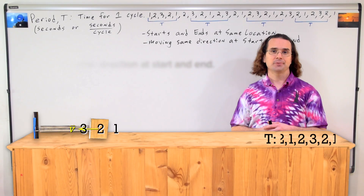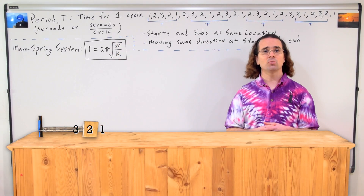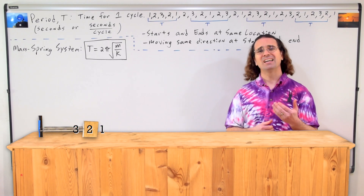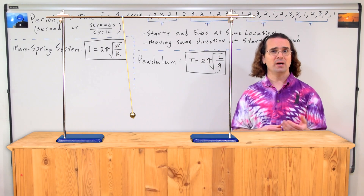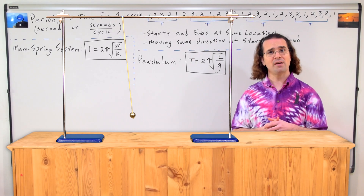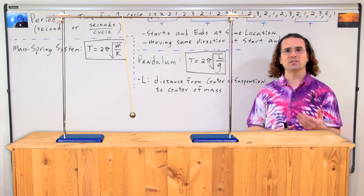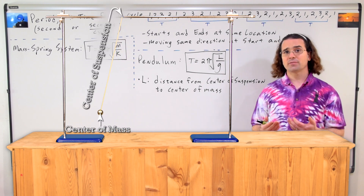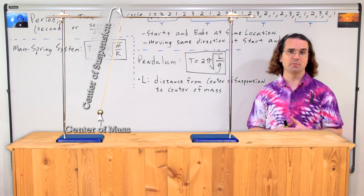All right, let's move on to the equations. The period of a mass-spring system equals 2π times the square root of the mass attached to the spring divided by the spring constant of the spring. The period for a pendulum equals 2π times the square root of the pendulum length divided by the acceleration due to gravity. The pendulum length is defined as the distance from the center of suspension to the center of mass of the pendulum. The center of suspension is the location of the top fixed end of the pendulum.